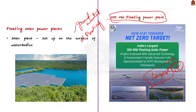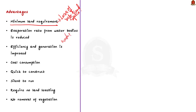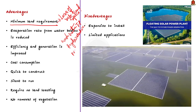The advantages of floating solar power plants include minimum land requirement — since many ground-mounted solar panels result in loss of valuable land space, floating photovoltaics do not require land. These installations can happen on unused water bodies like wastewater treatment plants, drinking water reservoirs, or hydroelectric dam reservoirs, eliminating the need for deforestation.